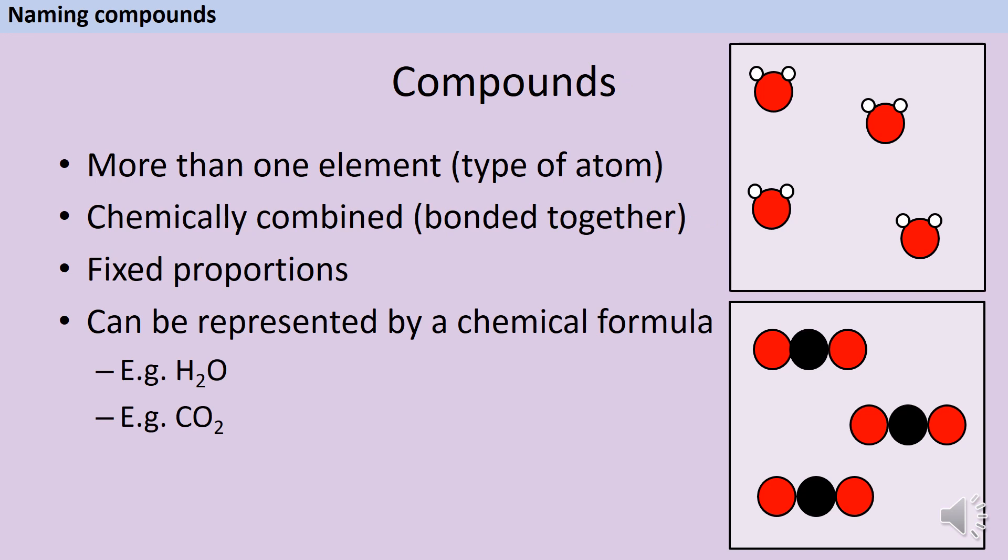Compounds are substances that are made from more than one element or more than one type of atom, which have been chemically combined or bonded together in fixed proportions. They can be represented by a chemical formula like H2O, which tells me that two hydrogen atoms have bonded with one oxygen atom, or CO2, which tells me that one carbon atom has bonded with two oxygen atoms.